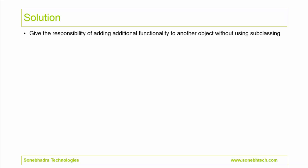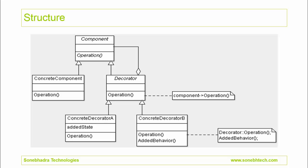Let's see the structure of the pattern. Here is the abstract class Component, which provides the interface to the client for adding functionality dynamically. Here is the concrete class ConcreteComponent, which represents the object where additional functionality will be added. Here is the abstract class Decorator, derived from Component, which has the responsibility for adding additional functionality. It has an instance of class Component. Here are the concrete classes ConcreteDecoratorA and ConcreteDecoratorB, which are used for adding functionality to the component object.